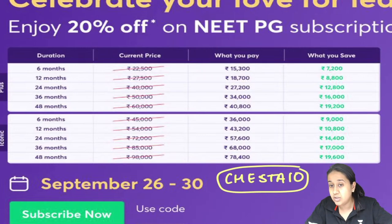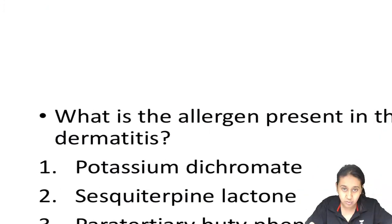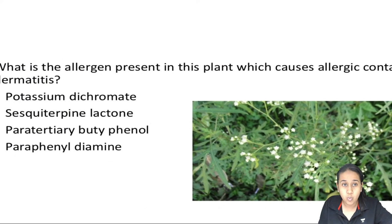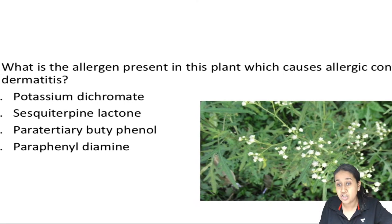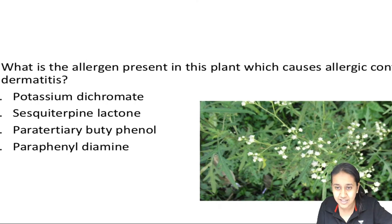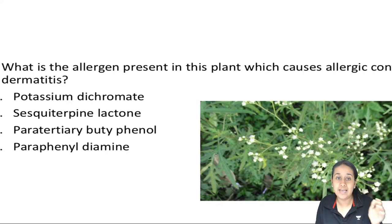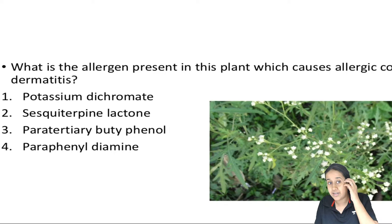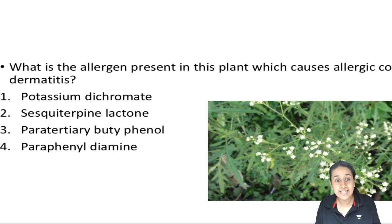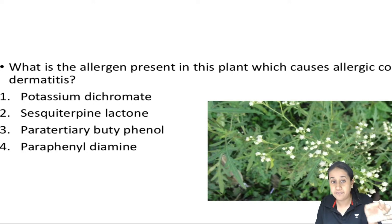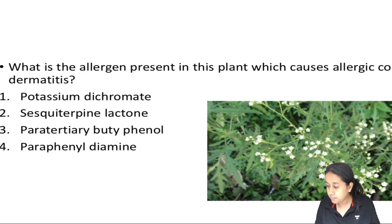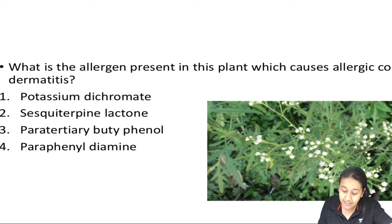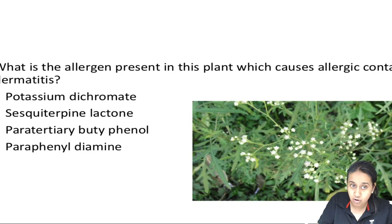Let us start with today's session where I will be showing you 10 more images. Starting with the first question: what is the allergen present in this plant which causes allergic contact dermatitis? Option 1: potassium dichromate; Option 2: sesquiterpene lactone; Option 3: para-tertiary butylphenol; Option 4: para-phenylenediamine. What is the correct answer?